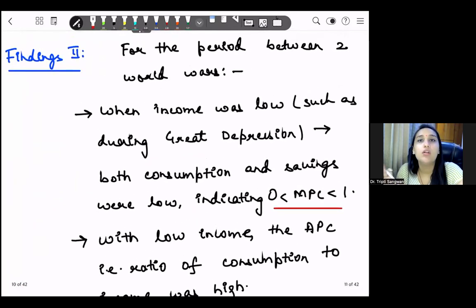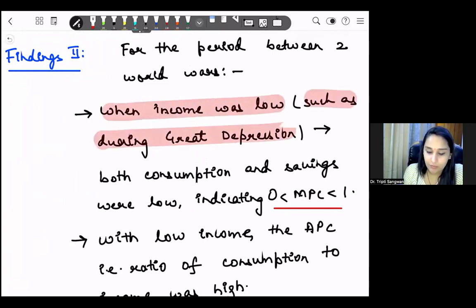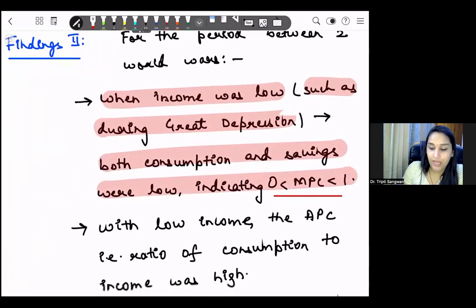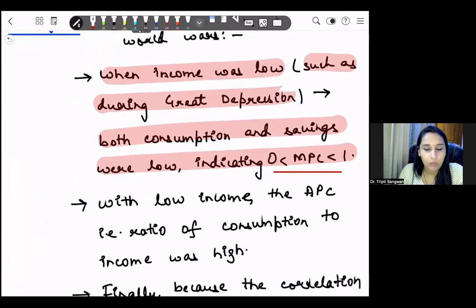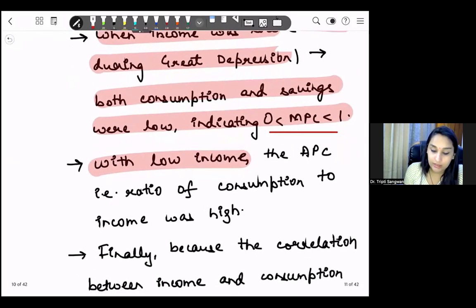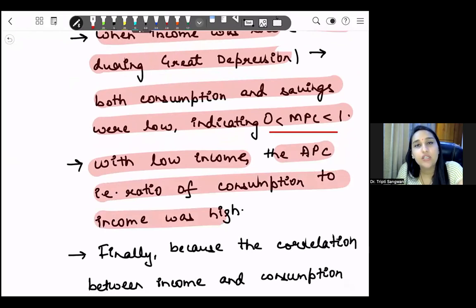Second finding, for the period between the world wars. How did consumption change at that time? So when income was low, such as during the Great Depression, both consumption and savings were low. And that also indicates that MPC lies between zero and one. Now the households which had low income, the APC, that is the ratio of consumption to income was high. Reason being that those who earn less income, they spend their maximum portion on consumption. For example, if we say that someone is a daily wage laborer, and if his income increases, he will first satisfy his basic needs. He won't think about saving. So first, he will satisfy his basic needs of food, clothes and shelter. When our income is low, we satisfy our basic needs. Naturally, our consumption expenditure is high, and saving is low.